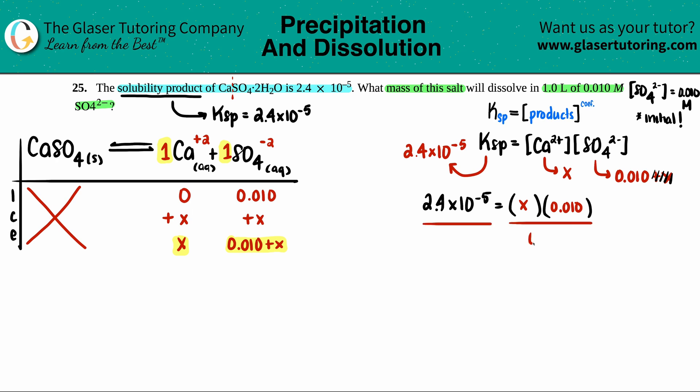So 2.4 times 10 to the negative fifth equals, we have x times 0.010. We want to solve for x, so divide by 0.010. And now we get x equals 2.4 times 10 to the negative 3. Now let's just see. Does it match the 5% rule or does it pass the 5% rule? How we check is we take that number that we just found and we divide it by the initial. So it's like part over whole. It's part over whole, but then we have to turn it into a percent, so that's why we times it by 100, and if this math is 5 or less, we are good. But if it's greater than 5, we have to go back and we have to keep that plus x in there. So let's see.